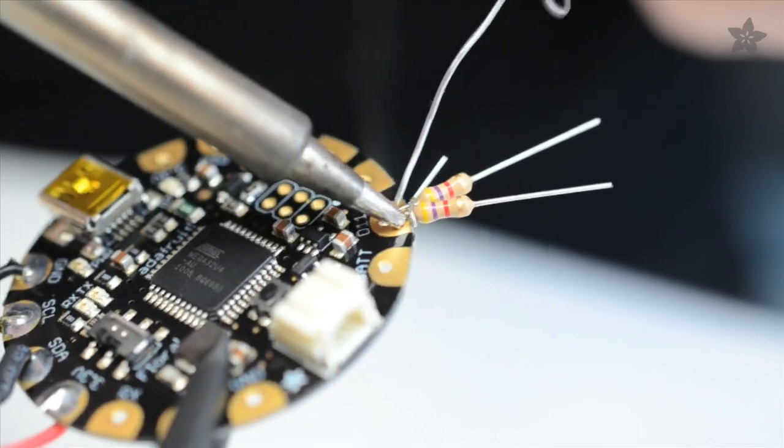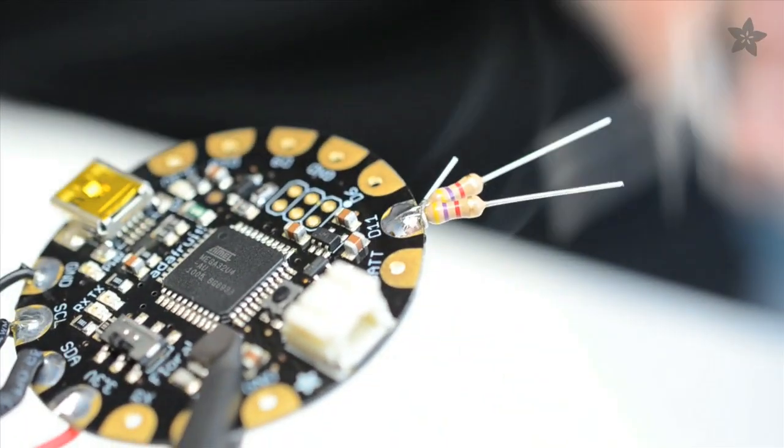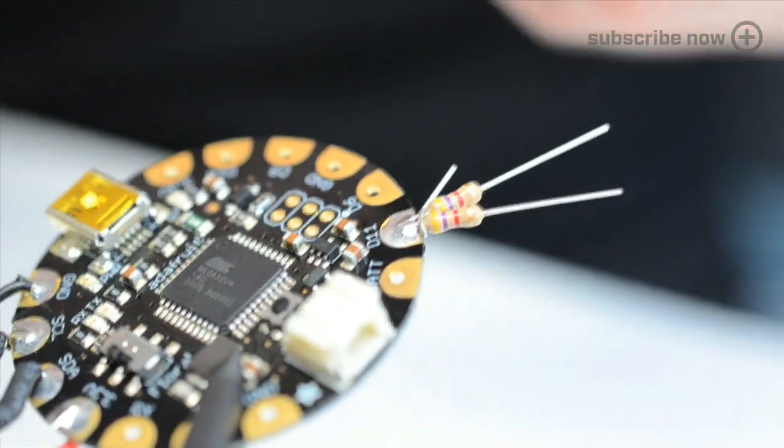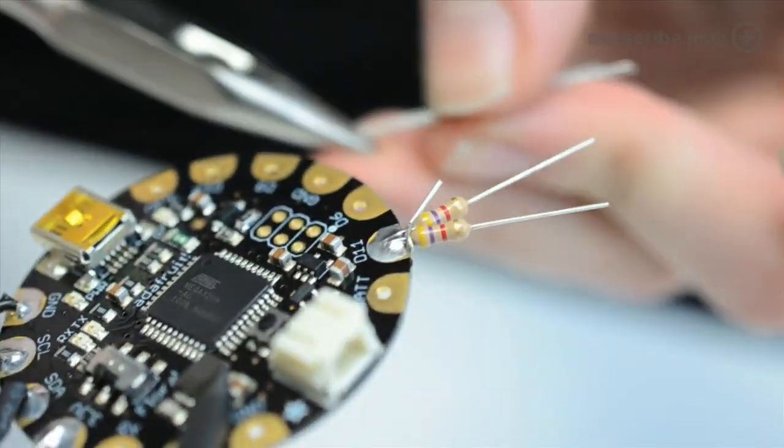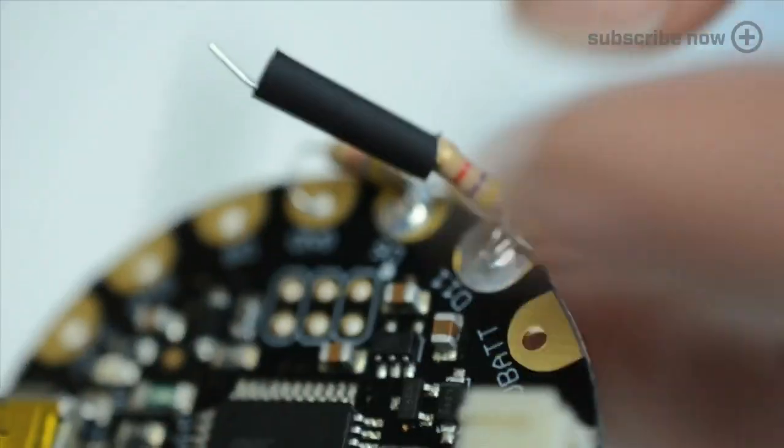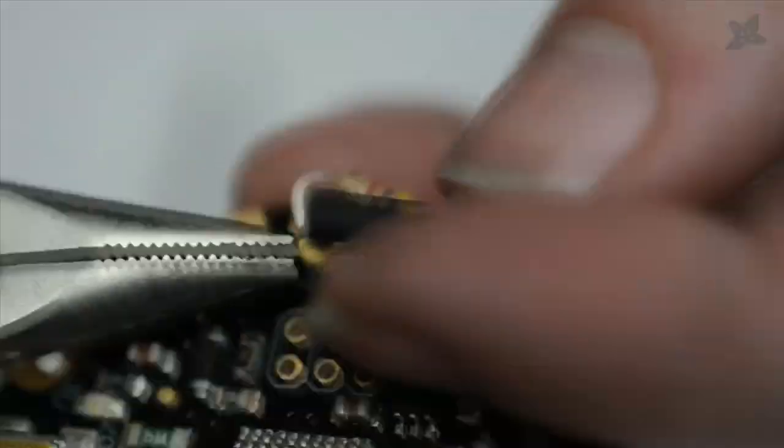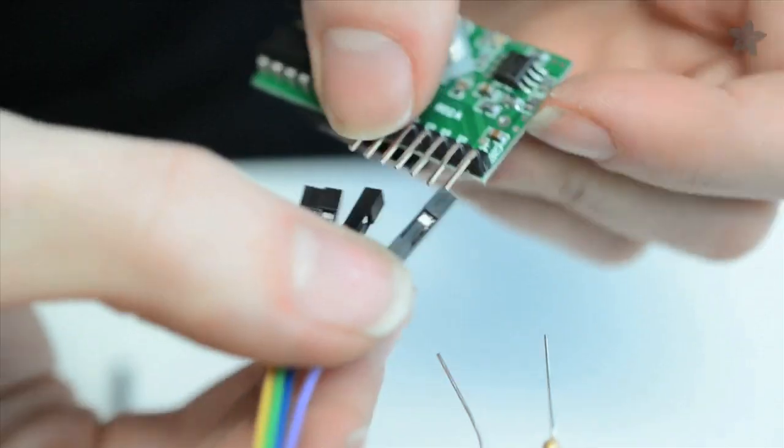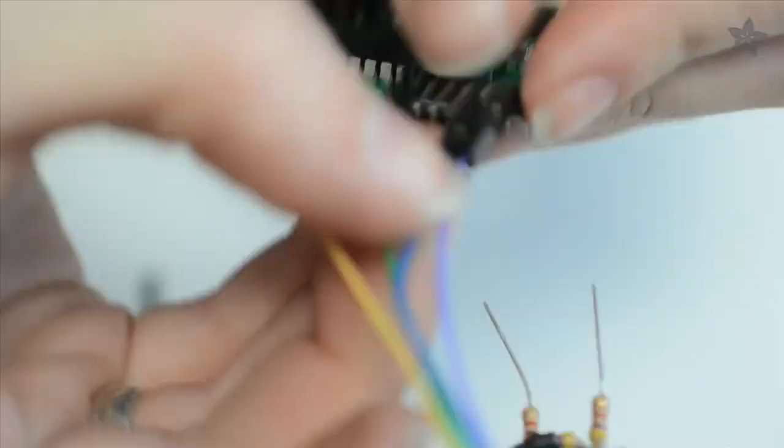So for every button you want to use on the remote, take two 4.7K ohm resistors and twist the leads together and solder them to the I/O pins on your Flora. One resistor from each pair will be soldered to ground and the other one can be soldered to the output pin of your RF module.